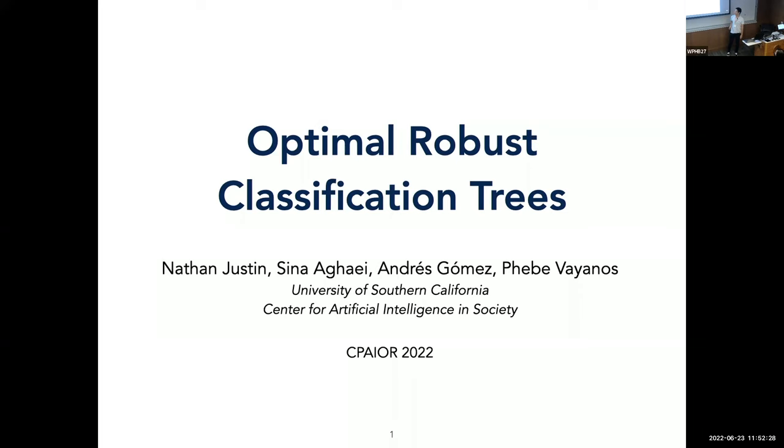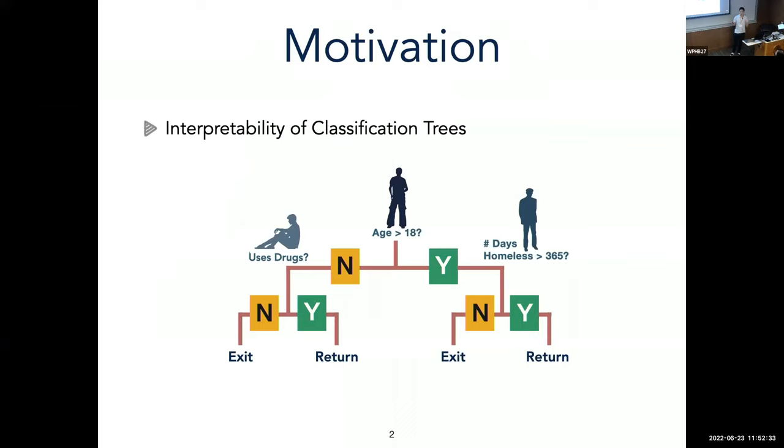So we've heard a few talks across CPIOR about classification trees. But just to give you a review, classification trees are a branching set of tests based off of the attributes of given data samples. Then after some series of tests, you assign a particular label to each sample. And so classification trees are a popular machine learning method, largely due to interpretability, which is necessary in many operations research domains.